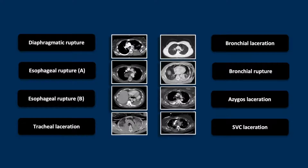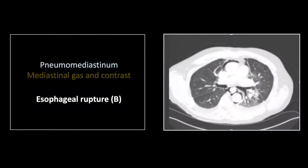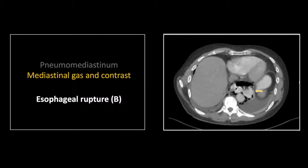Our next case is also an esophageal rupture. This one did result in an extensive pneumomediastinum, which you see here on the lung windows. There is a collection of mediastinal gas and contrast, relatively well circumscribed, in the inferior mediastinum. There is a nice view of the actual defect in the left distal aspect of the esophagus.